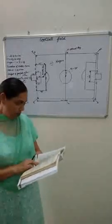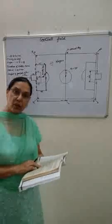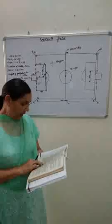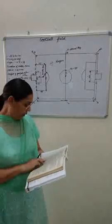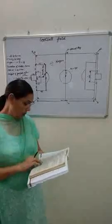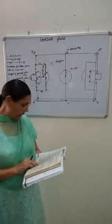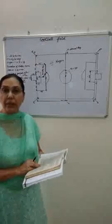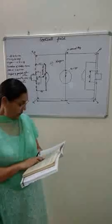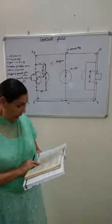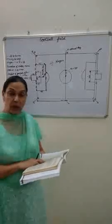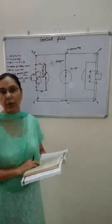That rule has now changed — the golden goal is an old rule. Now, if there is no goal from either side during extra time, five penalty kicks will be given to each team. In case the goals are still the same, the sudden death rule is applied.